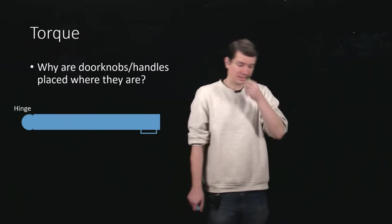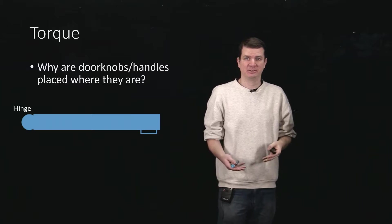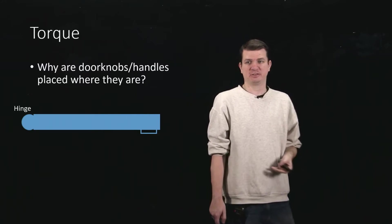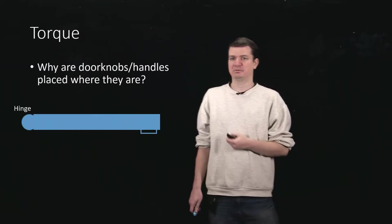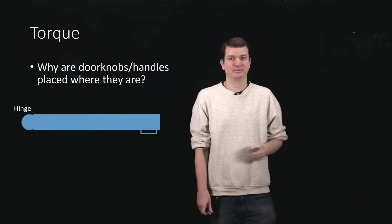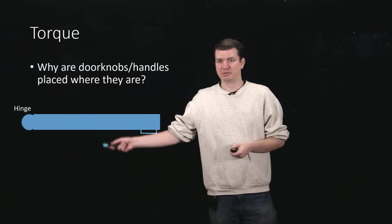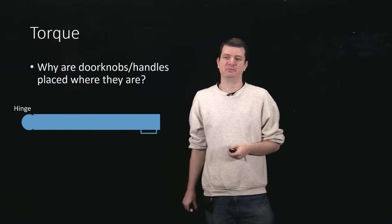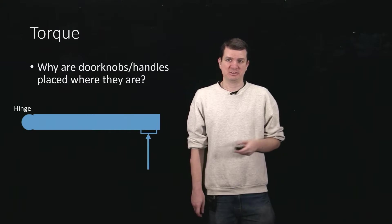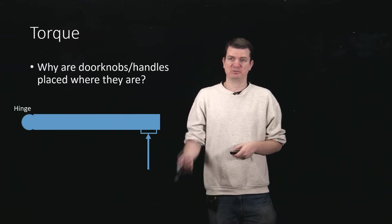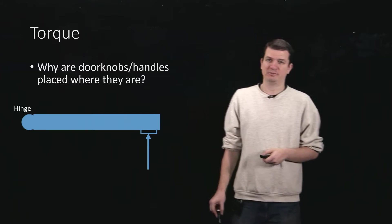In order to answer how you figure out something about torque, let's think of an everyday example. Why are door knobs or handles placed in the location that they're placed in? They've got a hinge on one side and we tend to put the handle on the far side. Is there a reason for that? The way you open this is either pushing or pulling applied right at that handle.